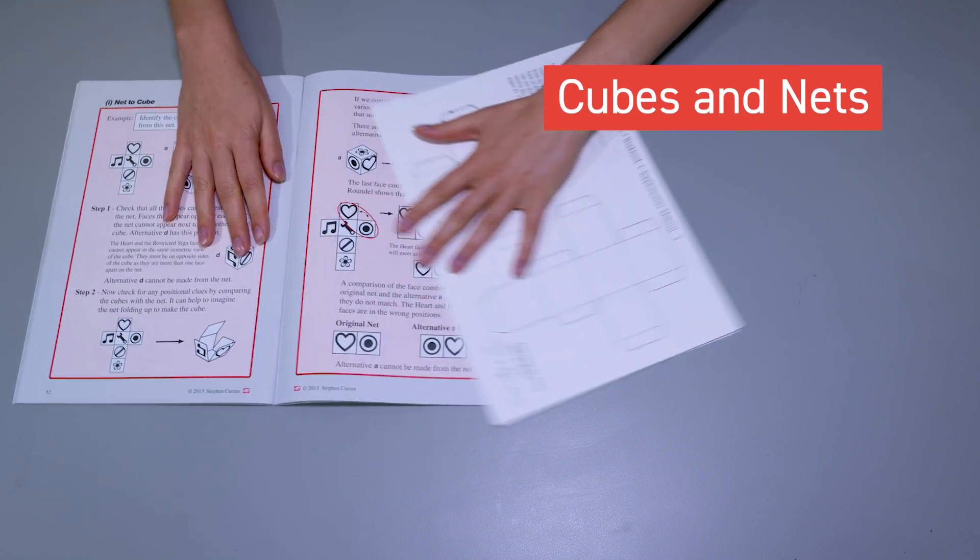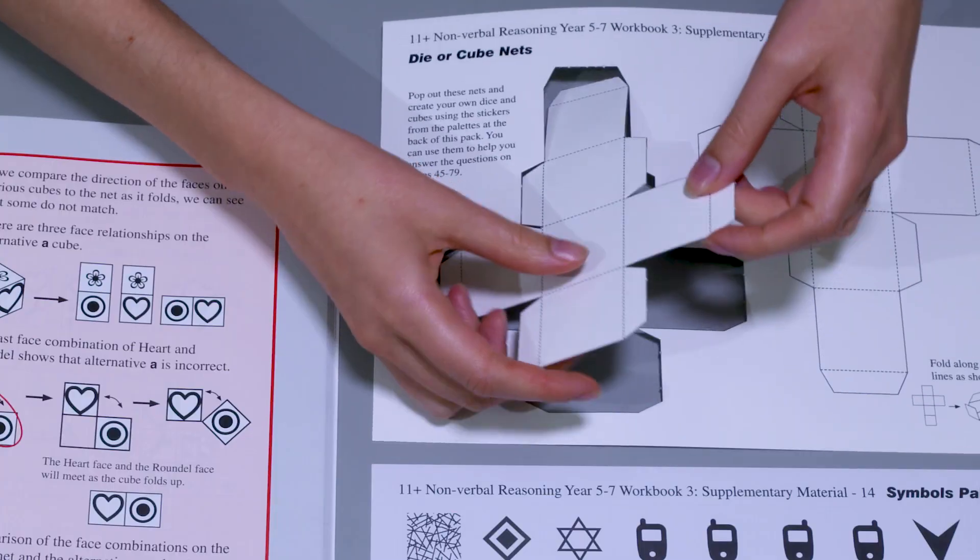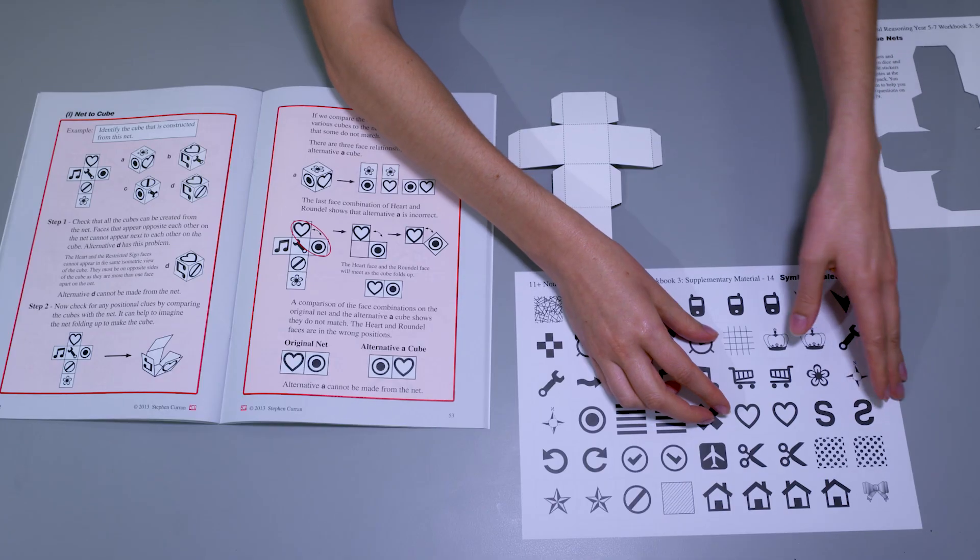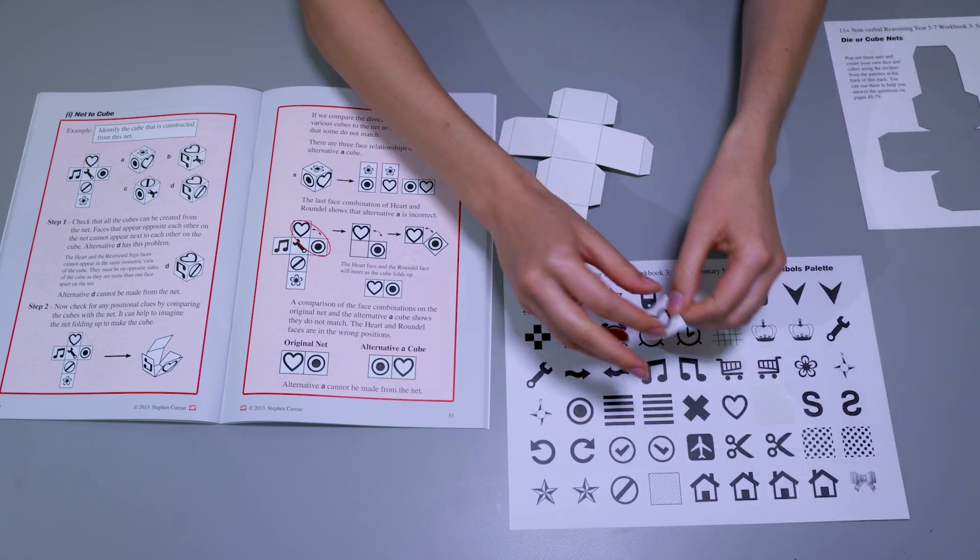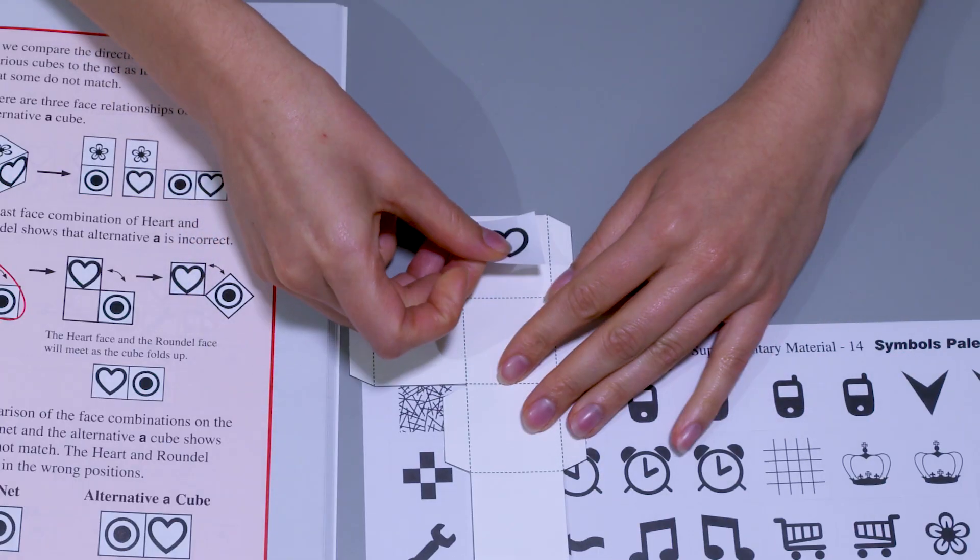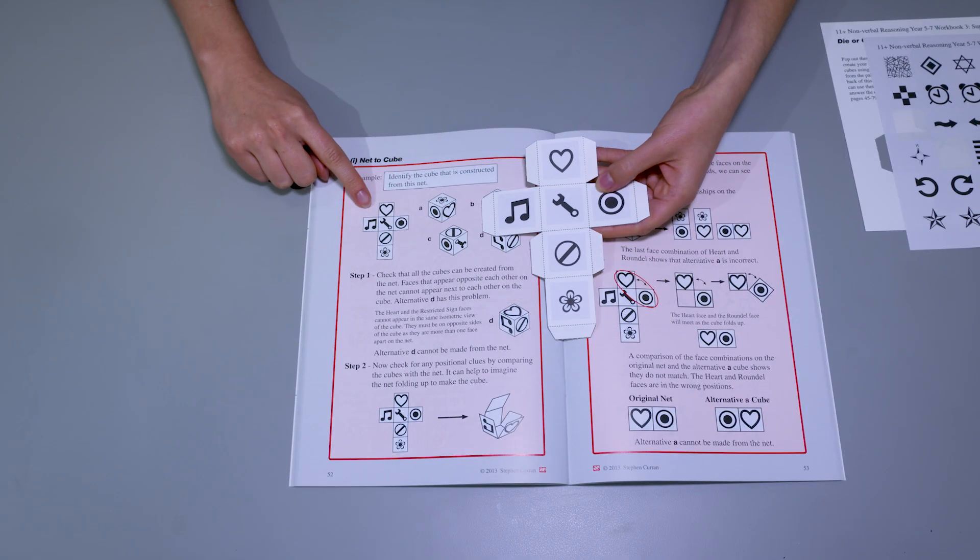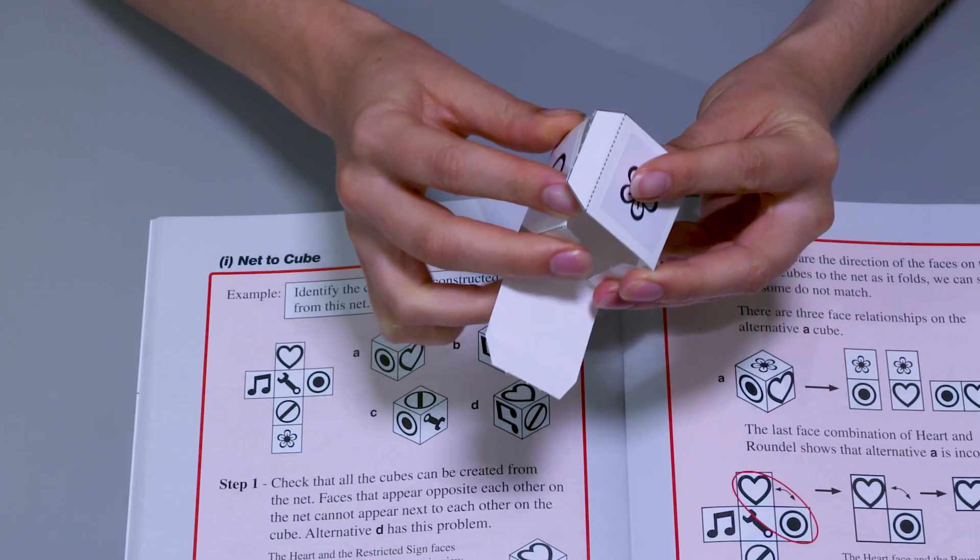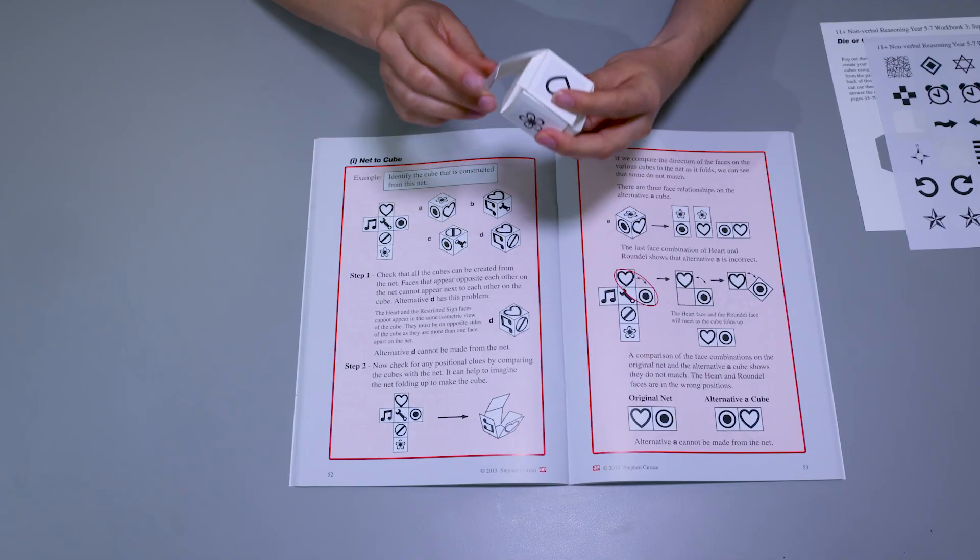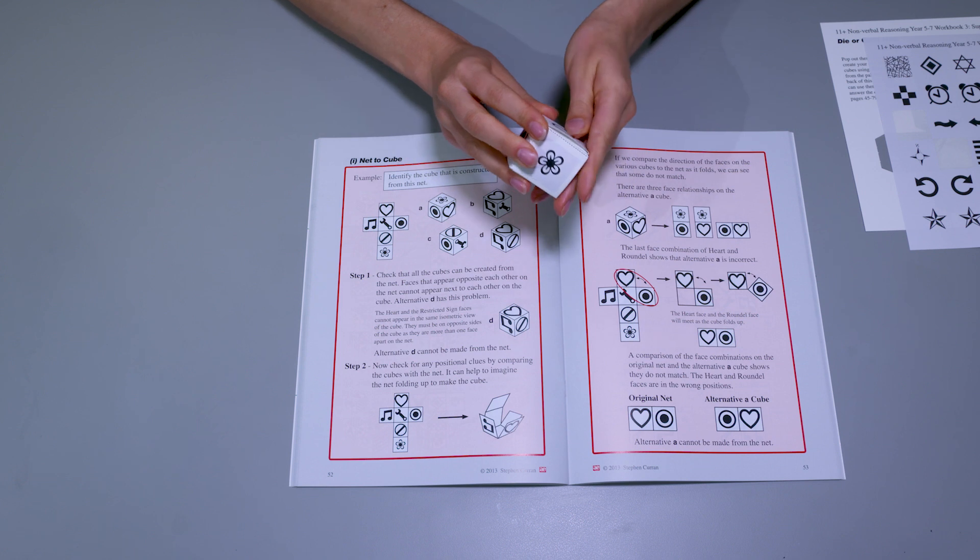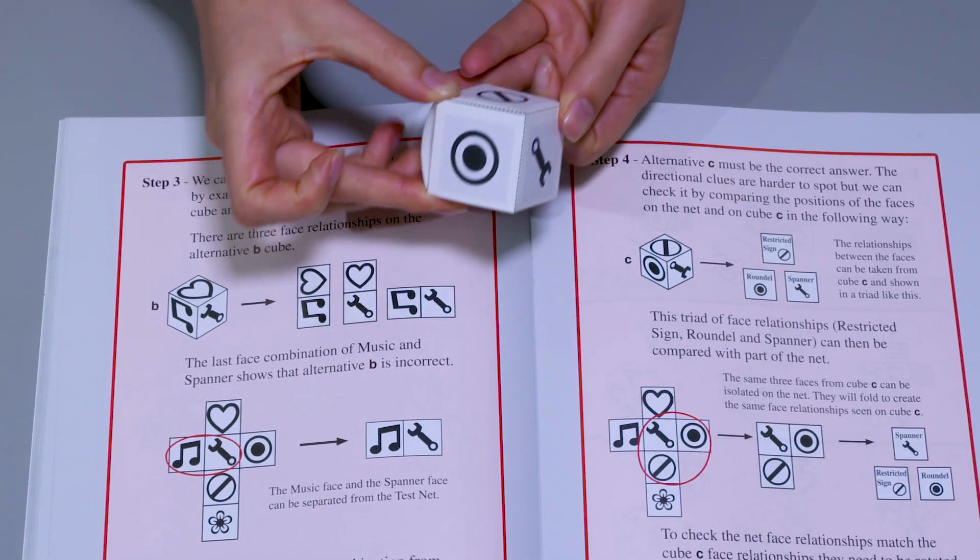Cubes and Nets. Also included are numerous cube and die nets. These are invaluable tools for understanding cube and die questions. They come with sticker sheets containing dots to use on the dice and symbols and patterns to create cubes. These are very easy to use alongside the book and children can recreate any question they are struggling with.